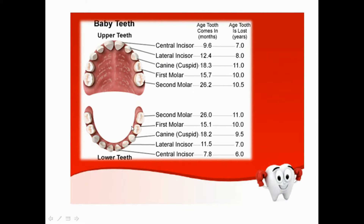You can see here in the pictures the upper jaw and the lower jaw, and the spaces in between the teeth — at babies, this is normal. On the right side of the picture you can see written for every tooth separately when it's normal to show up in the mouth and when it's normal to lose it.